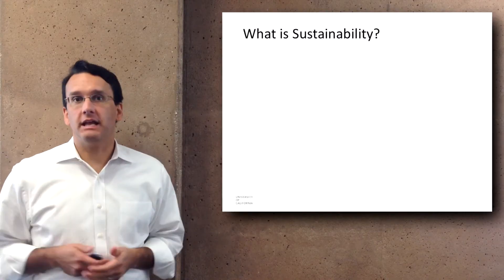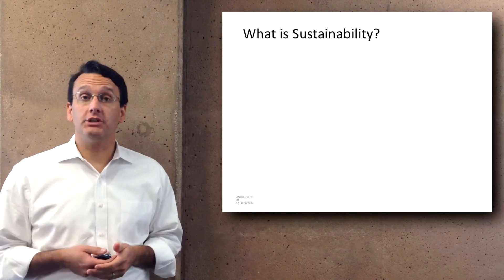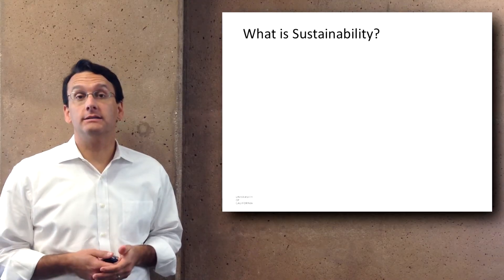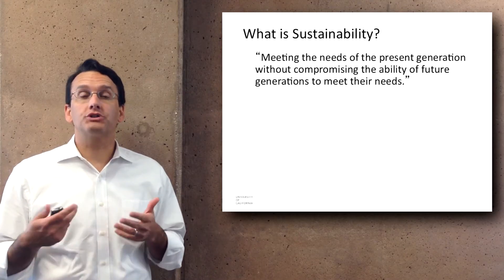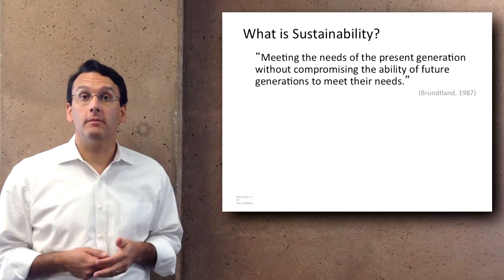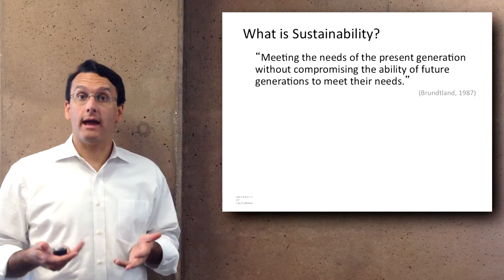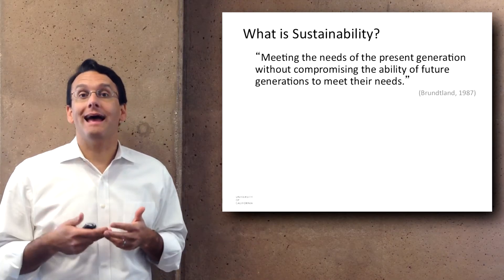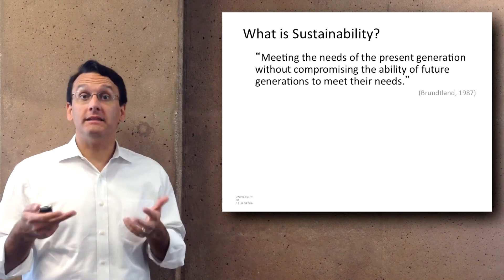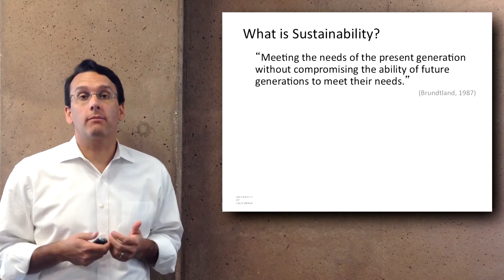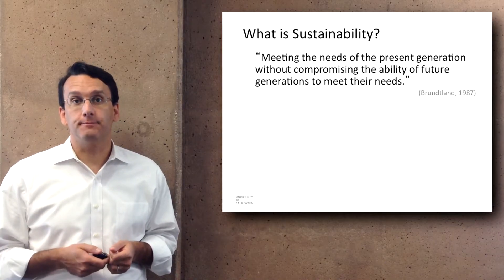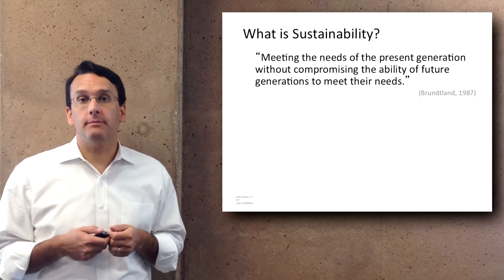So what is sustainability? Lots of different organizations have different opinions about what sustainability is, and one of the most commonly accepted definitions is from 1987. Gro Harlem Brundtland from the UN defined sustainability as meeting the needs of the present generation without compromising the ability of future generations to meet their needs.